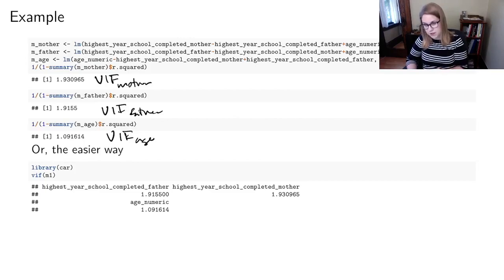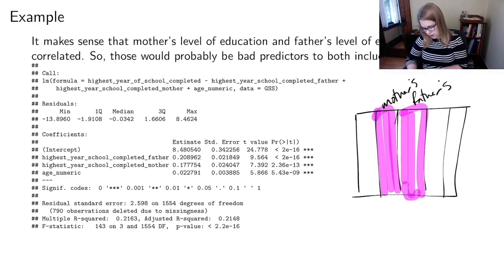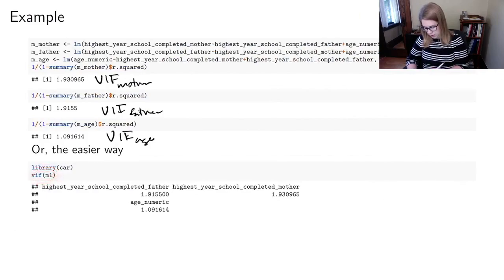But the easier way to find the VIF value in R is to use the VIF function. It comes from the package car for classification and regression and we're doing regression and you would just run VIF on a model that had all of those things in it. So I don't think I showed you that model but it was the one from this previous slide where I'm predicting the highest year of school completed based on father, mother and age. And so I just run VIF on m1 and it gives me the VIF for father, the one for mother and then the one for age and they're the same numbers that we found doing it the hard way. So I recommend just doing it the easy way. So this is another thing to add to your toolbox when you're assessing your model is finding the VIF.